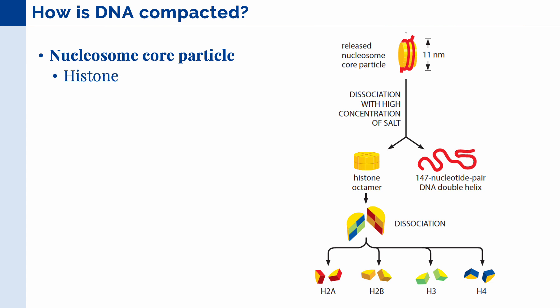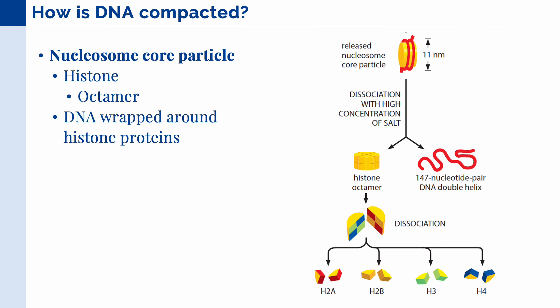If we take just the histone and the DNA around it, we call that the nucleosome core particle. This is composed of the histone, which is actually an octamer, meaning it is composed of eight different types of proteins. Two copies each of histone H2A, H2B, H3, and H4. And we have the DNA around the histone protein approximately 147 base pairs long. Together, they wrap around the histone around 1.7 times, or 1.7 turns.